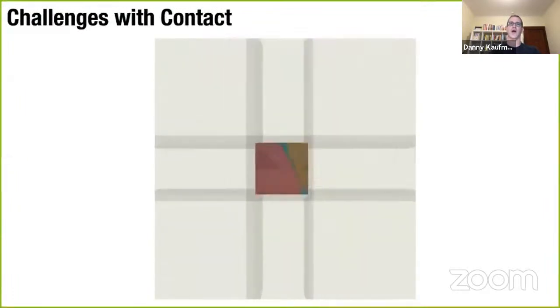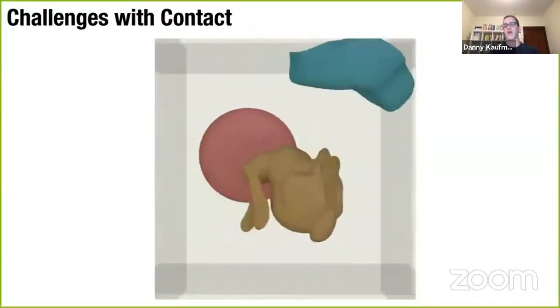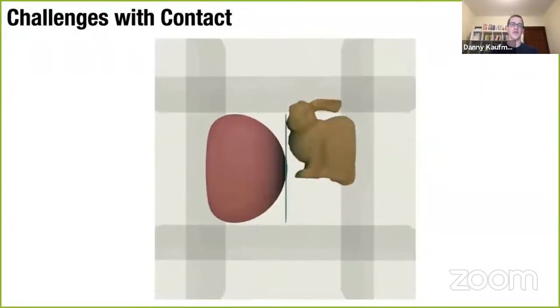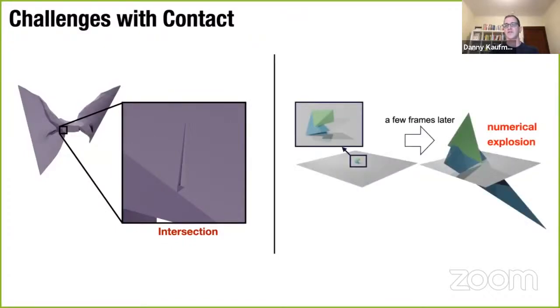Instead, essentially what we want to do is take the full step directly. And this is where Newton type methods are really helpful. But when we add contact into the picture, things become much, much, much, much harder. And now, as we saw earlier, even taking tiny time steps won't necessarily guarantee success and stability. For example, where contact is really stressing the deformation.